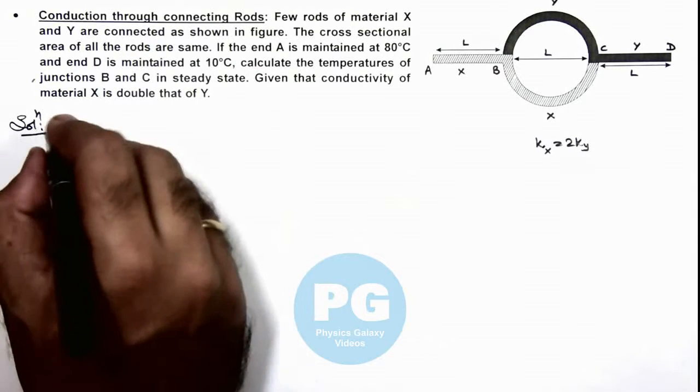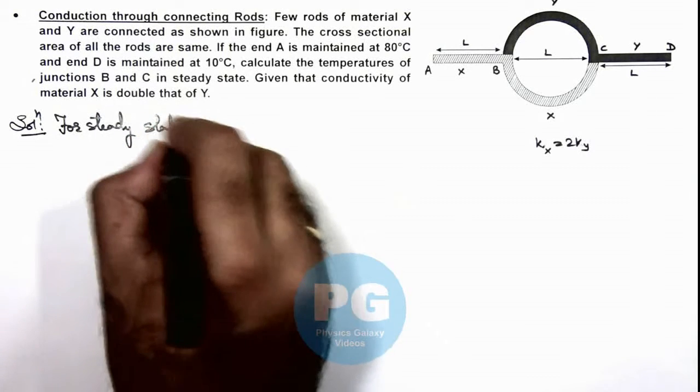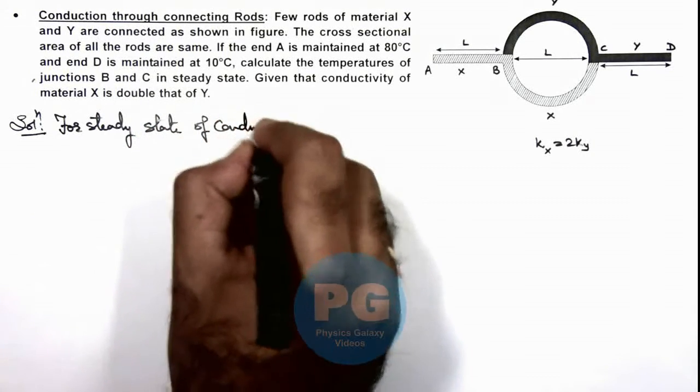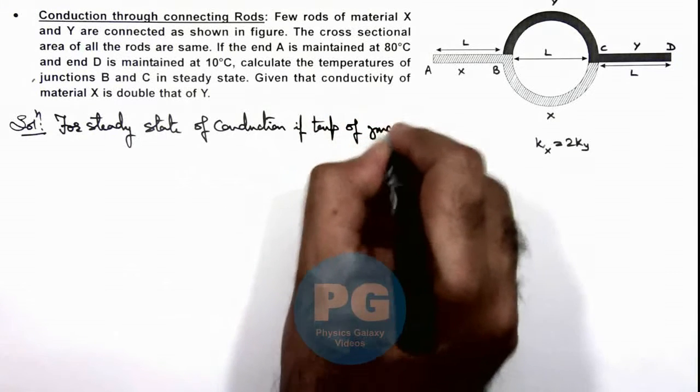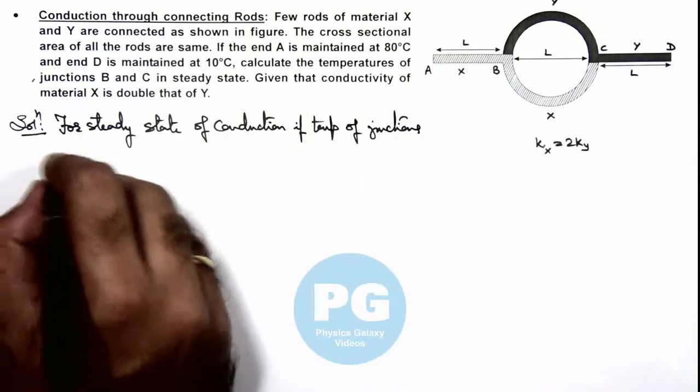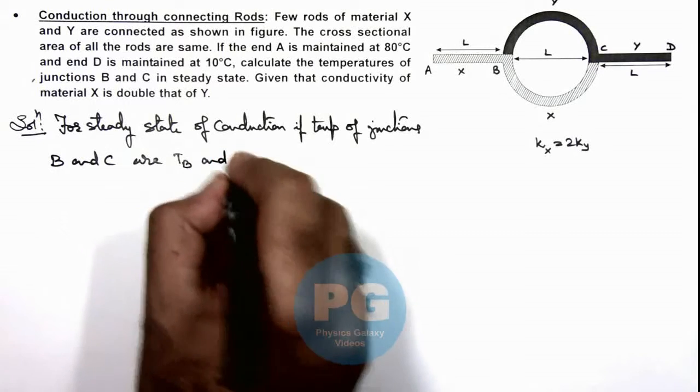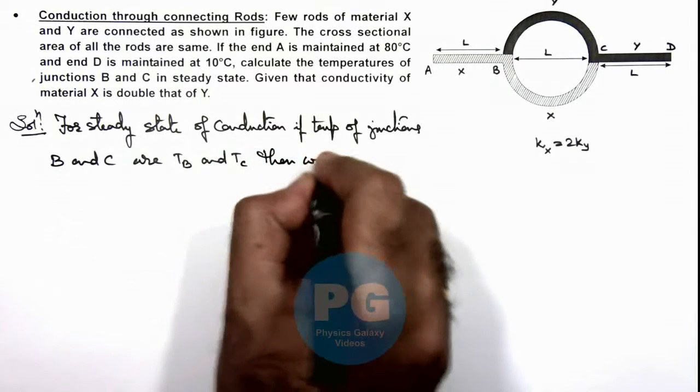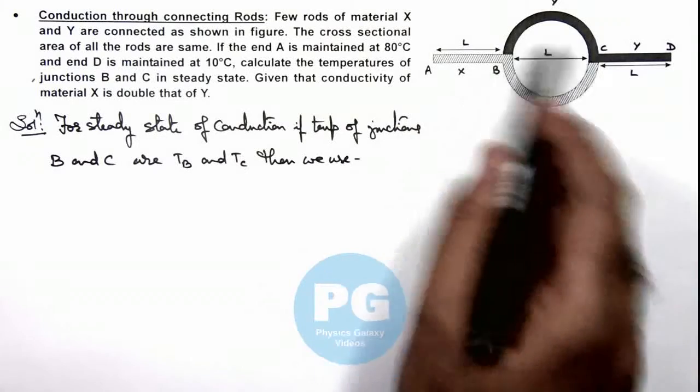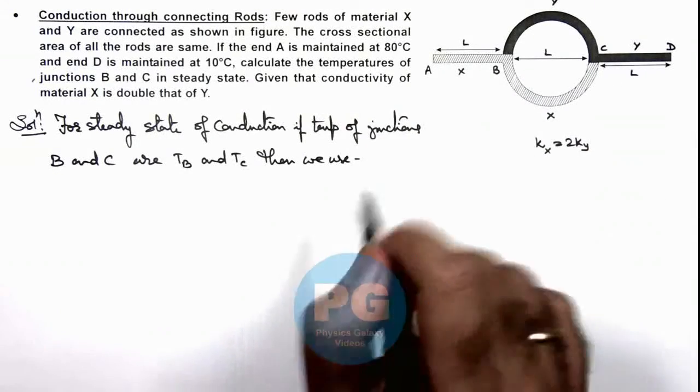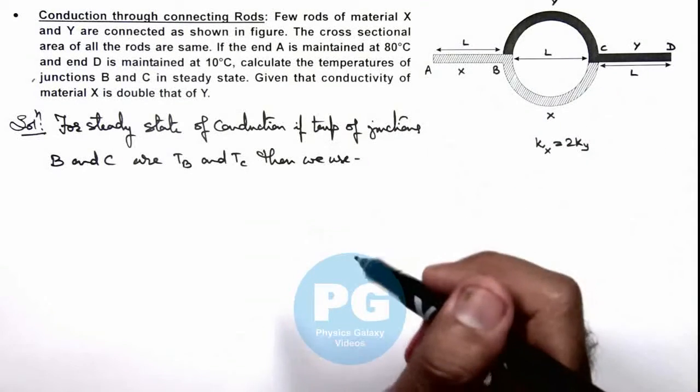So here we can write for steady state of conduction, if temperatures of junction B and C are TB and TC, then we use for junction B and C we can apply Kirchhoff's laws, or the rate of flow of heat throughout the regions from A to D should remain constant, whichever channel we opt it won't make any difference.